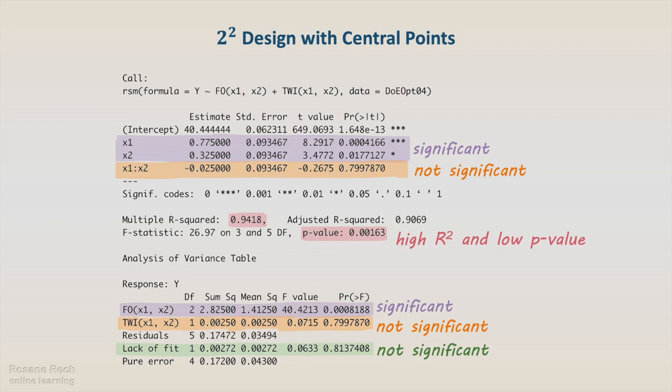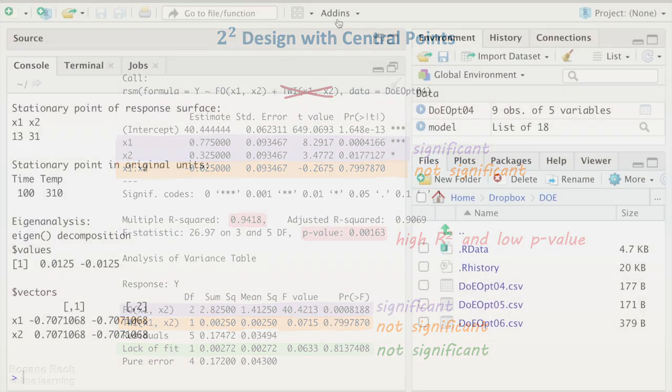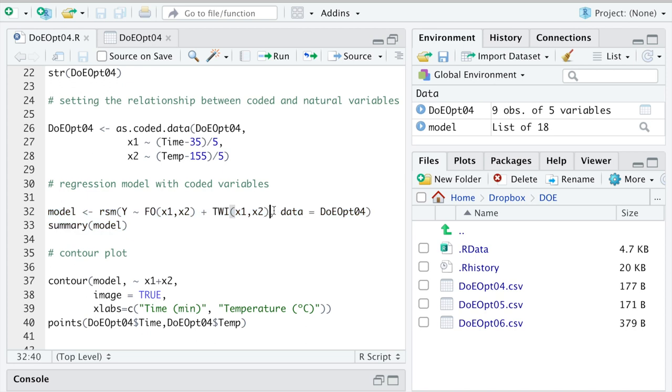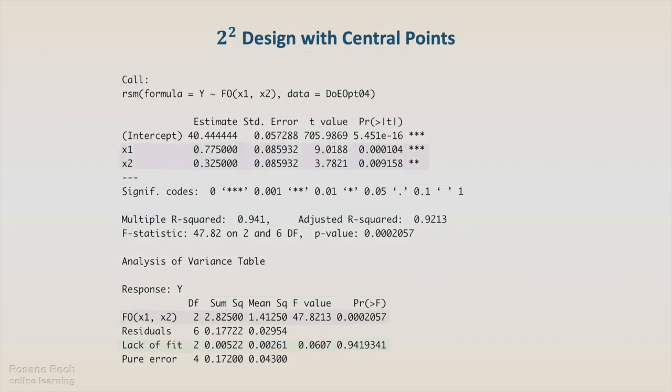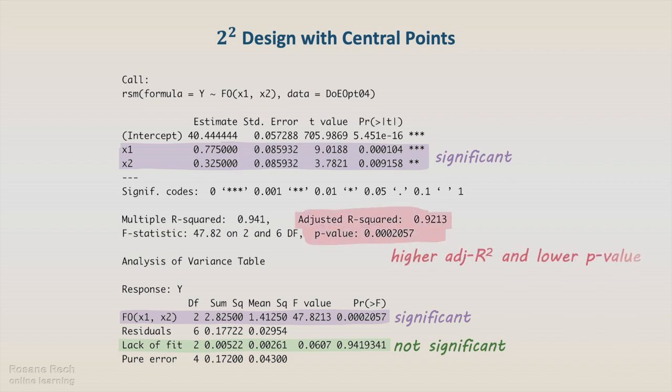As the interaction was not significant, we can remove it from the model and run it again. Now all regression coefficients are significant and the lack of fit continues to be not significant. This new regression has a higher adjusted r-squared and a lower p-value, compared to the previous one. And this simplified model still has a high r-squared of 0.941, and all regression coefficients are significant.